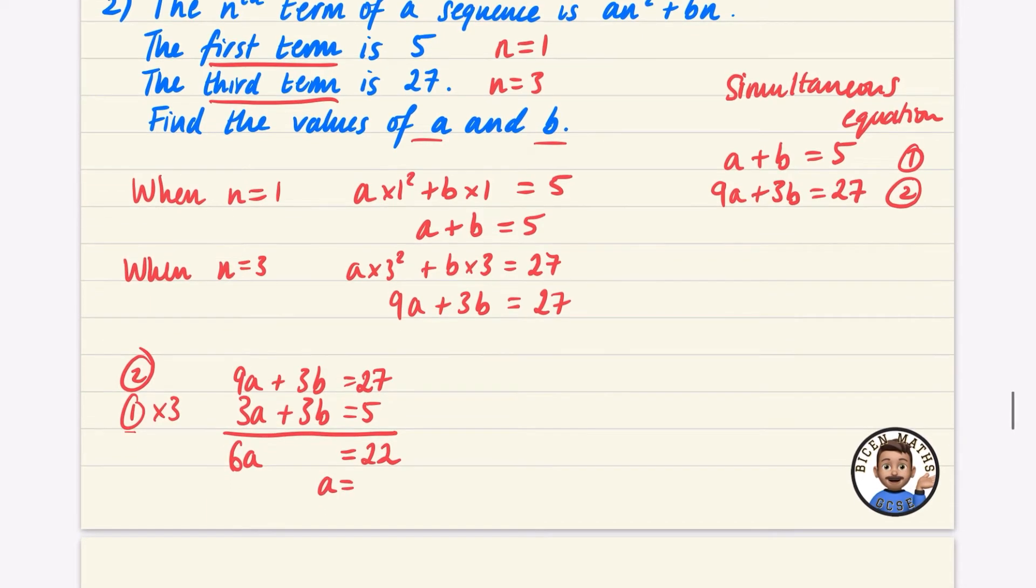I foolishly didn't multiply everything here by 3, so it shouldn't have been 5, it should have been 15. So 27 take away 15 is 12. Dividing by 6, a is equal to 2. I'm going to just use this one here. a plus b is equal to 5. a is 2, and so when I subtract the 2, b is equal to 3.